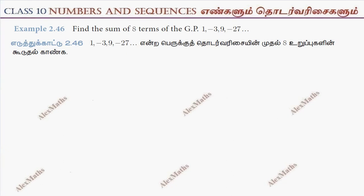Hi students, this is Alex here. Example 2.46: Find the sum of 8 terms of the GP 1, minus 3, 9, minus 27, dot dot dot.